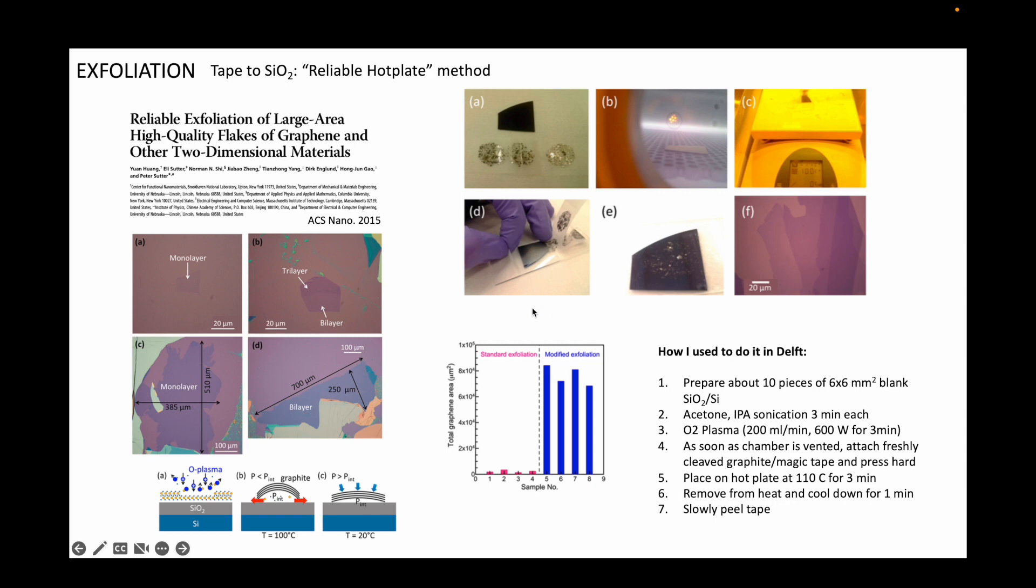Another thing is to peel away as slowly as possible. Some groups even make Arduino-based machines that peel away the tape controllably, even over the course of, say, one hour to get the best yield of something like monolayer graphene or monolayer hBN.